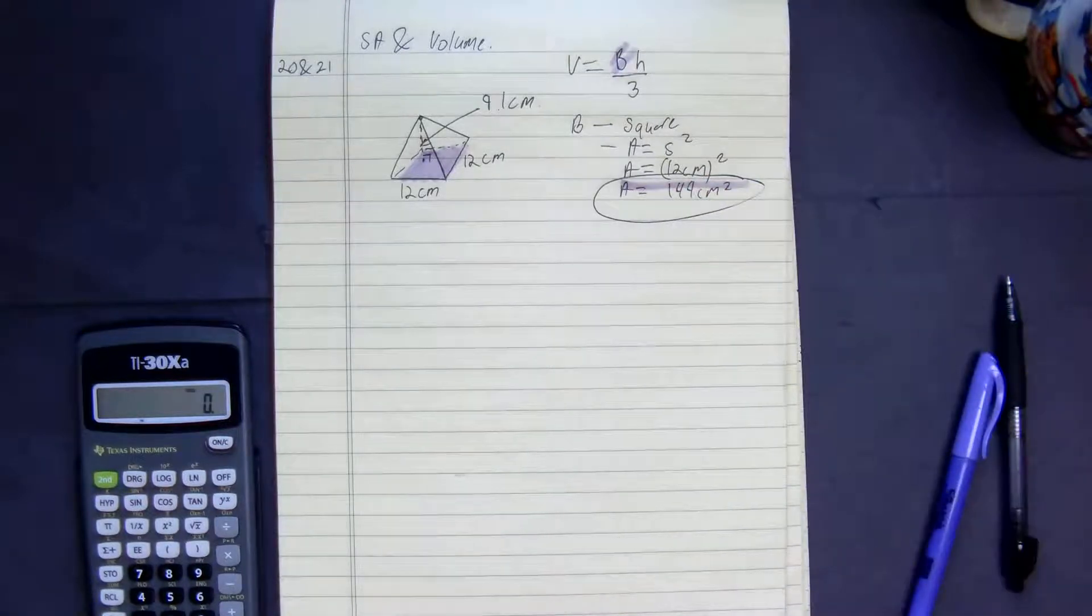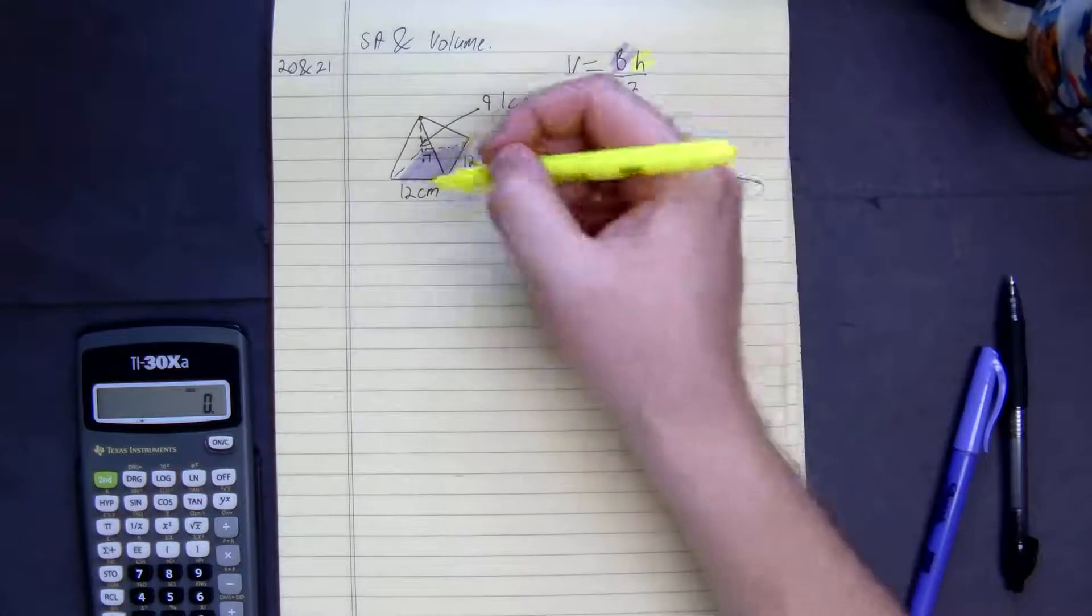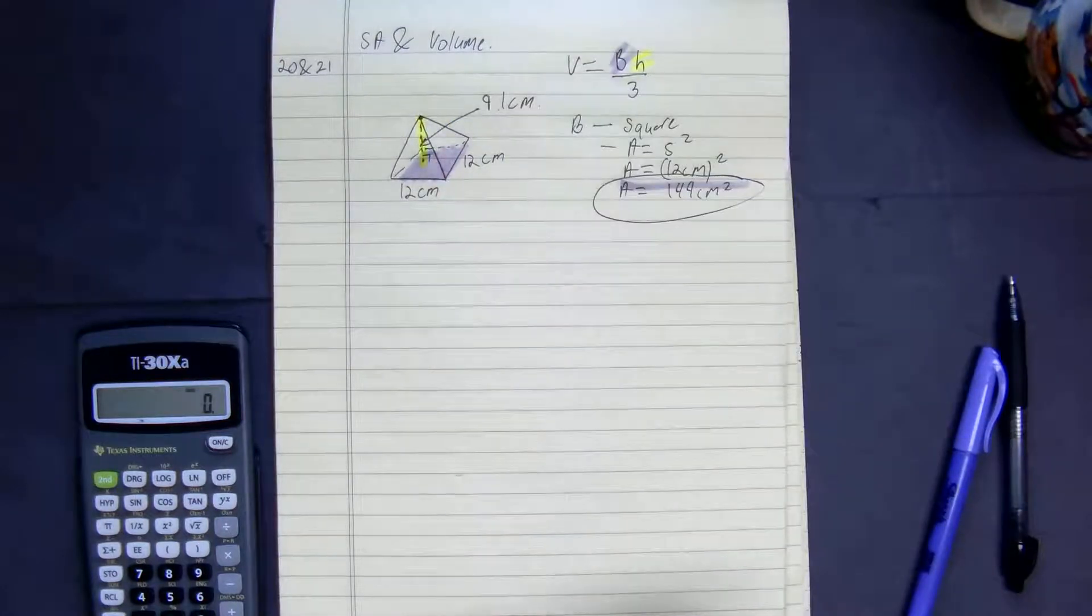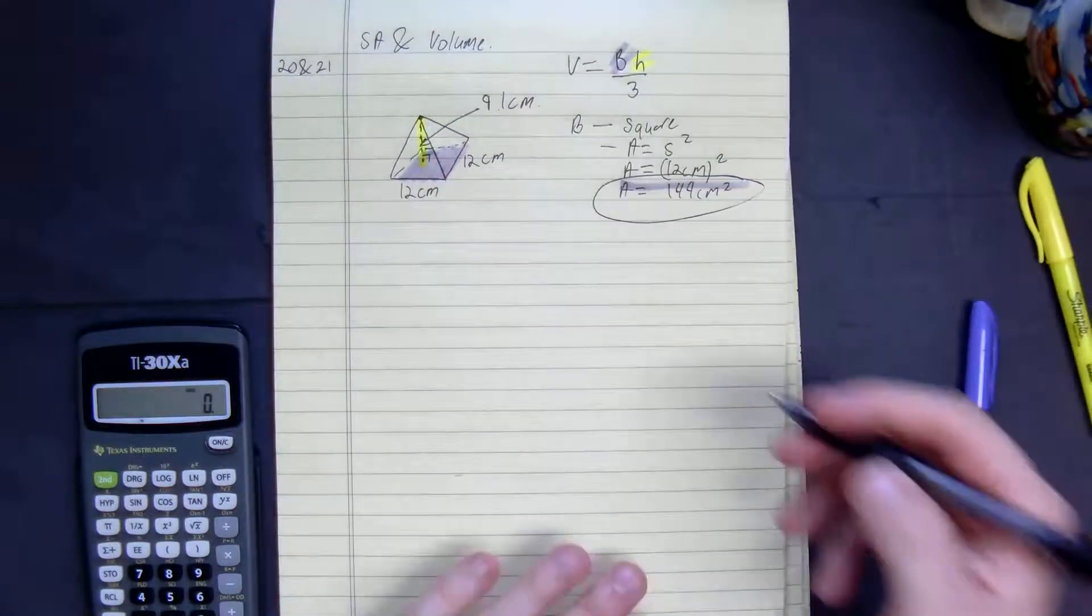The height and distance between the base and the apex, the highest point, is 9.1. Good. So let's figure this out.